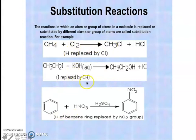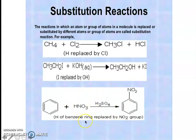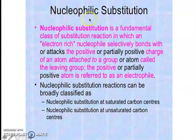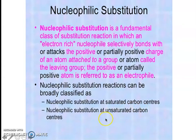The first two examples are nucleophilic substitution reactions and the third is electrophilic substitution. In the first two cases a nucleophile is being substituted in, while in the third case an electrophile is substituted in. A nucleophile is an electron-rich species that prefers to attack a positively charged species. Nucleophilic substitution can take place at a saturated or unsaturated carbon center, but in the BTEC syllabus we focus only on substitution at saturated carbon centers.